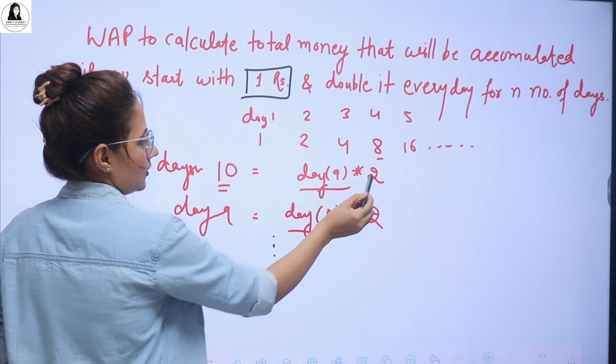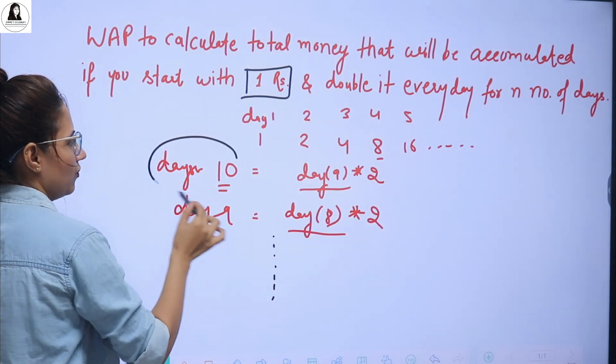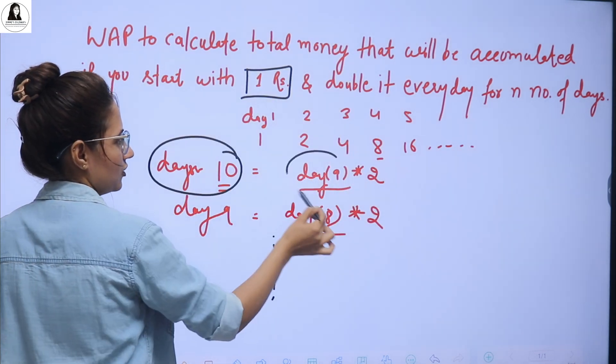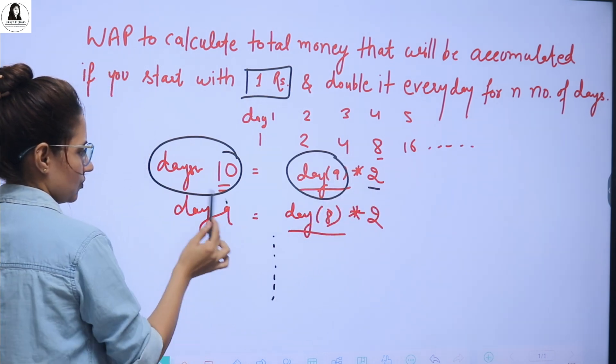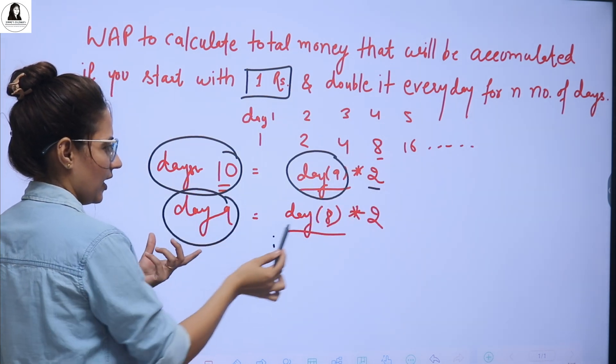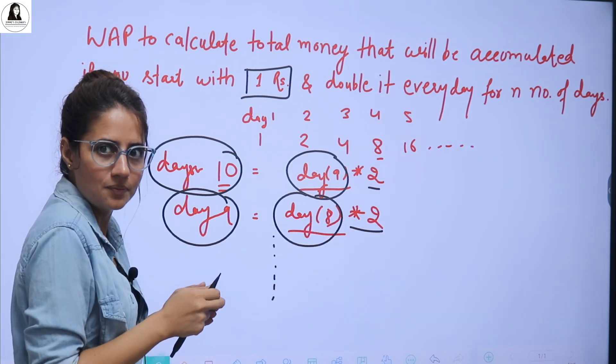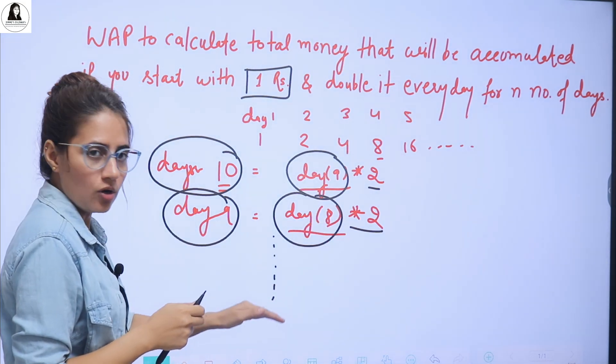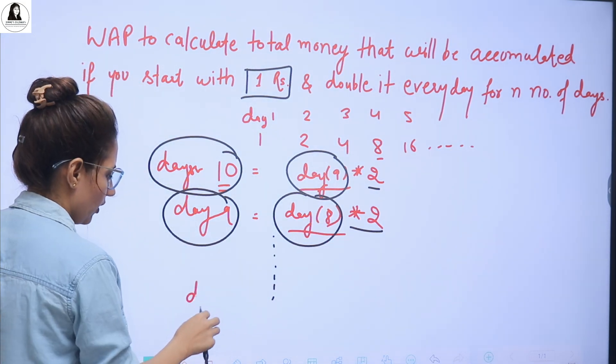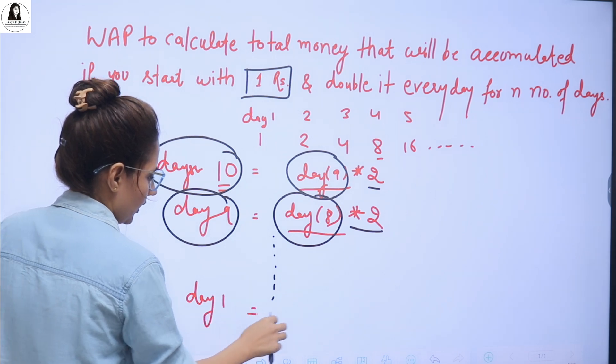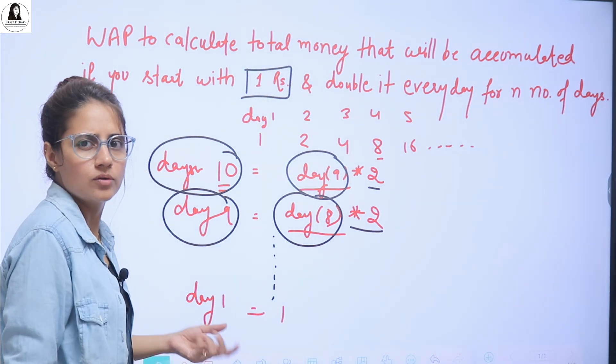So see, this is obviously what recursion. Here is one function. Again, same function I am calling and into 2. See, the function day 9, the same function I am calling and into 2. So this is kind of recursion, right? And when to stop? At day 1. At day 1, because I have only money is what? 1 rupee.